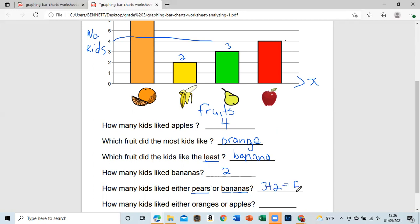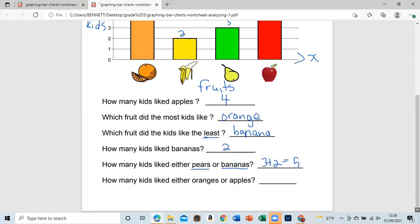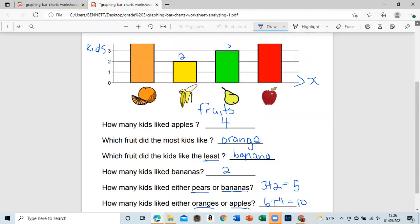How many kids like either oranges or apples? So oranges was six, and apples was four, so it's ten students like either apple or orange. So this is orange and this is apple. Let's carry it back up here.